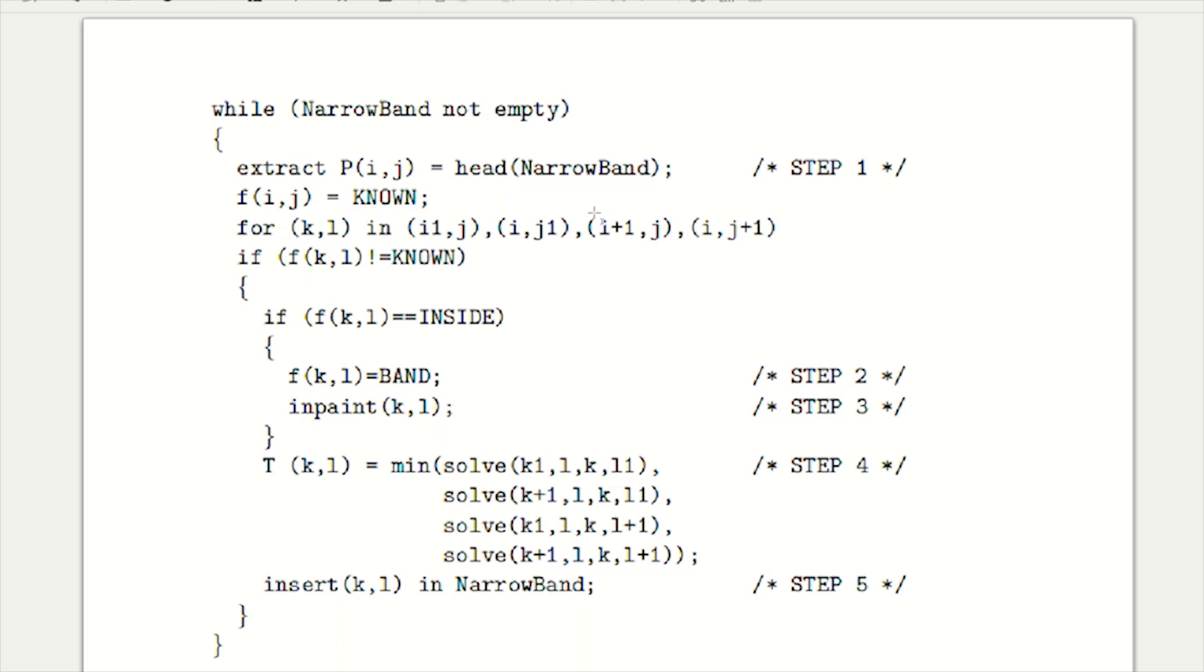First, we extract the BAND point with the smallest T value—that's step one. Next, we march the boundary inwards by adding new points to it. We inpaint this point, then propagate the value of T of the new point to its neighbors.